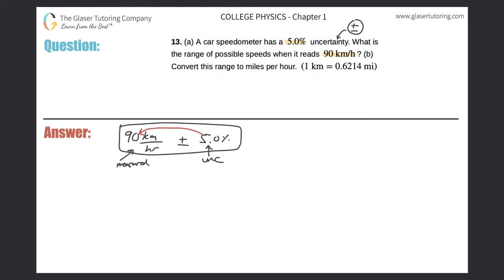So let's write that down. So I'm going to write it right beneath. So there's going to be 90 kilometers per hour, right? Plus or minus 5%, 5.0% of 90.